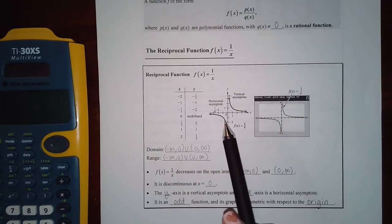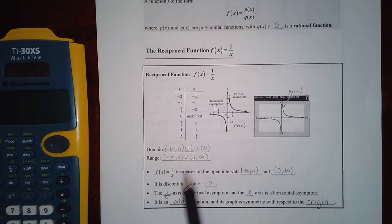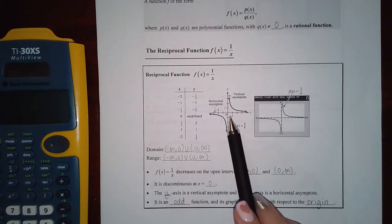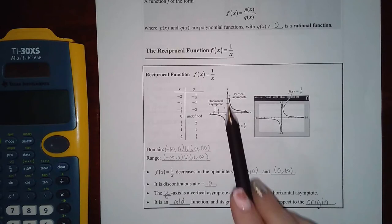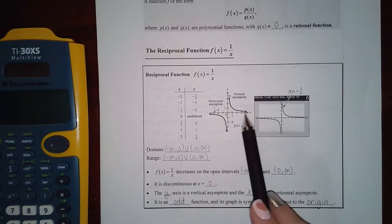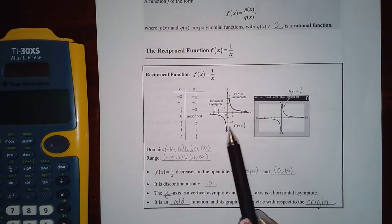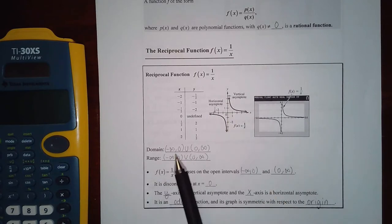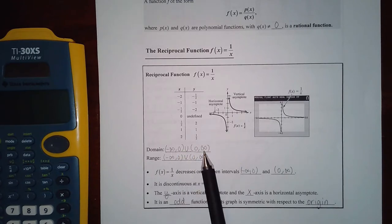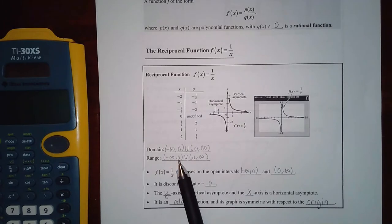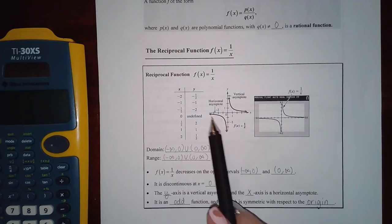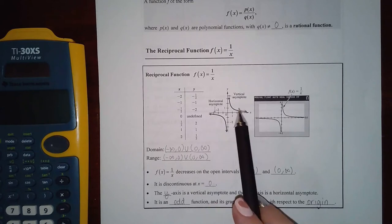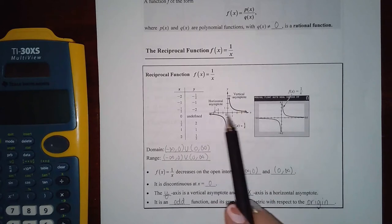For the basic rational function 1/x, the graph has a break at zero — it never ever touches zero. The domain is from negative infinity to zero and zero to infinity. The range is also from negative infinity to zero and zero to infinity, because the graph goes both ways but never touches zero.